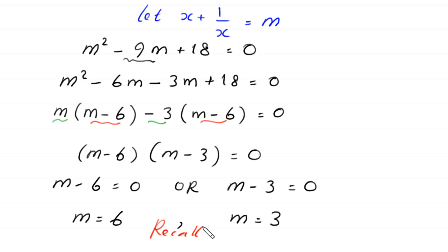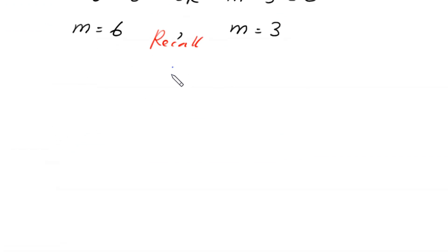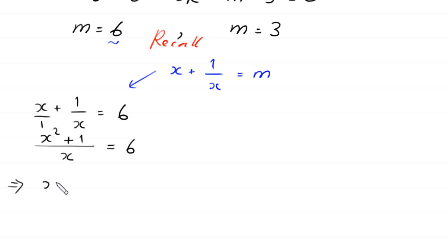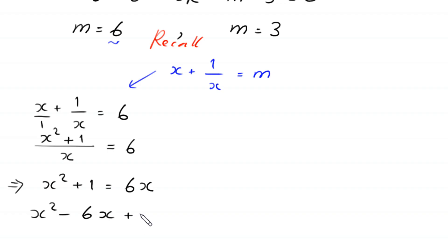Recall that we supposed x plus 1 over x equals m. When m equals 6, the equation becomes x plus 1 over x equals 6. Taking LCM as x, this gives x squared plus 1 over x equals 6. Multiplying both sides by x, we get x squared plus 1 equals 6x. Moving 6x to the left-hand side: x squared minus 6x plus 1 equals 0.